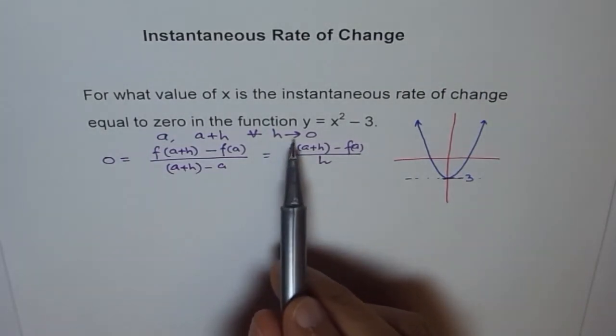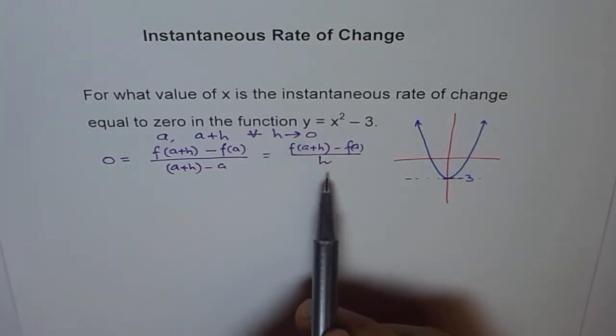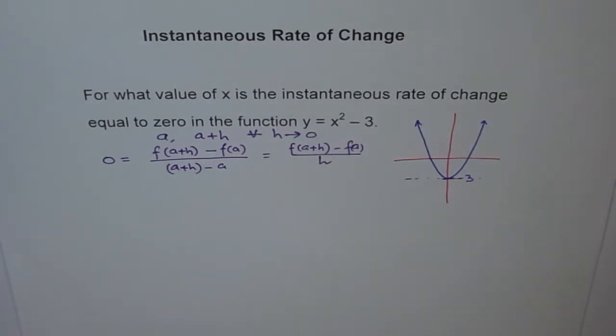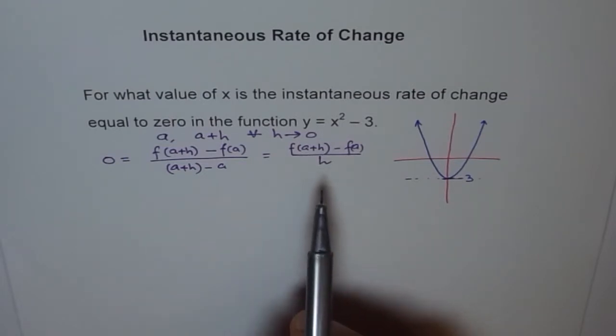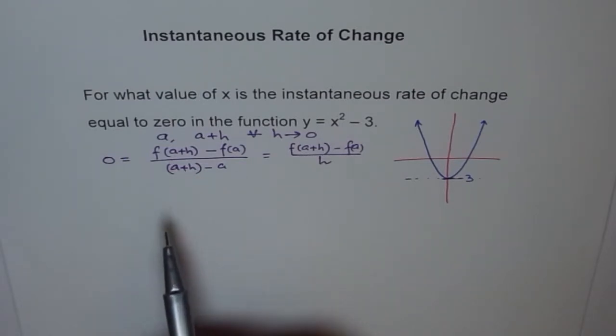So here, H is approaching 0, it is not 0, it's very close to 0. So when H is very close to 0, we will neglect the terms like H square and all, because they are going to be very, very small.